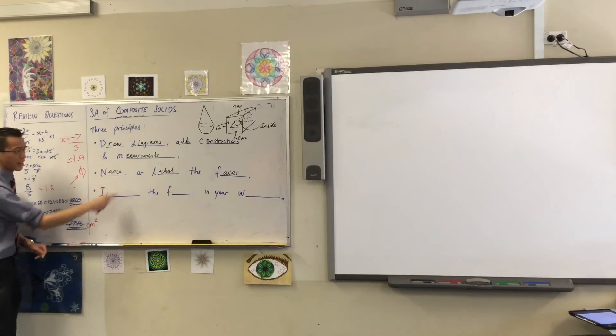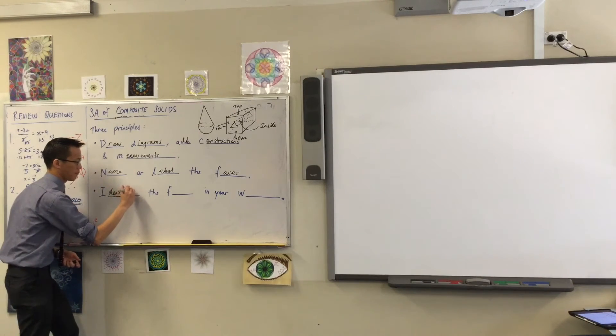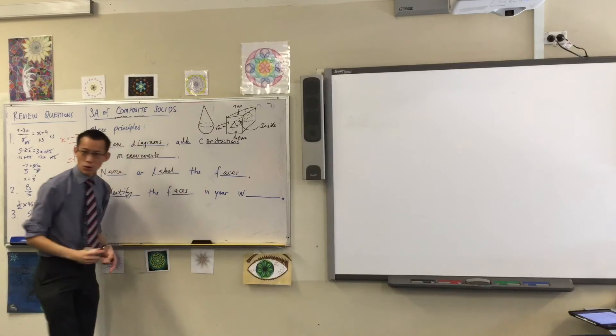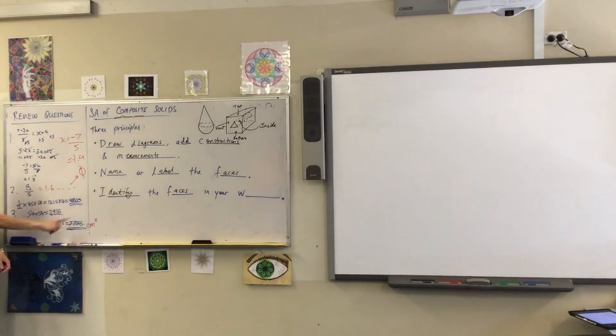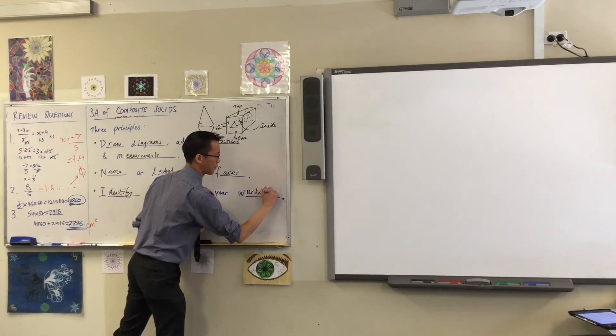Okay, lastly, and it's just sort of feeding off of this second principle. Once you've labeled those faces, you should identify those faces in all of those equations and calculations that you're doing down here. Okay, see all of this stuff? This may all be numerically correct, but I don't really know what any of it refers to. Like, what is 4860? What does it signify? I'm guessing now it's the four triangular faces. By looking at that and trying to work it out, I think that's what's going on. Okay, so tell me that's what you're doing. Communicate clearly. So identify the faces in your working.